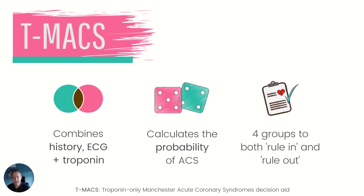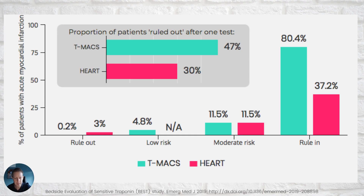Let me tell you about TMAX — the Troponin-only Manchester ACS decision aid. Like HEART, it aims to rule out patients early in the emergency department with one test on arrival. It was derived by machine learning and combines elements of the patient's history, their ECG, and their troponin to calculate the probability of a myocardial infarction, then stratifies patients into four groups: rule out, rule in, low risk (who can go to ambulatory care for a second troponin), and moderate risk (who may need more workup such as an acute medical unit). Compared directly to HEART in an observational study, TMAX had better negative predictive value, better positive predictive value, and was more efficient — allowing 47% of patients to go home compared to 30% with HEART.